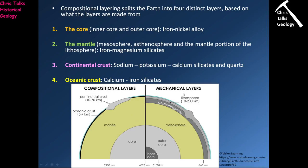Eventually we end up with a layered earth. Splitting by composition: the continental crust is rich in sodium, potassium, and calcium silicates and quartz; the oceanic crust is rich in calcium-iron silicates; the mantle is rich in iron-magnesium silicates; and the core is iron-nickel alloy. From a physical standpoint: the lithosphere is solid, the asthenosphere is semi-liquid (like a slushie), the mesosphere is solid, the outer core is liquid, and the inner core is solid. Make sure you remember this diagram as it tends to come up in exams.